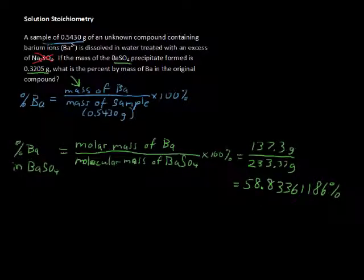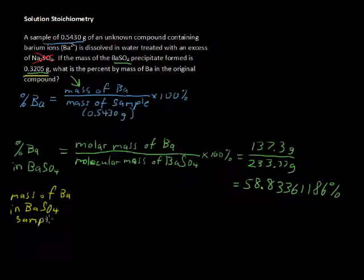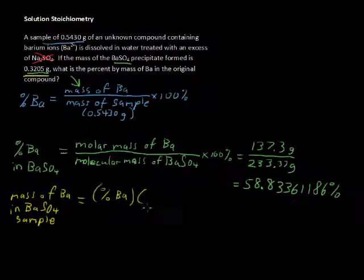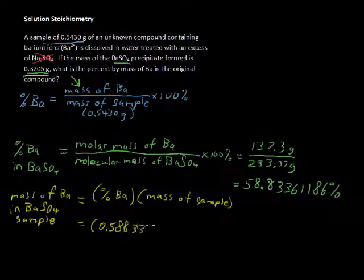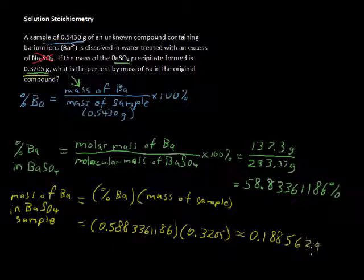Now that we have the percent of barium, now we can find the mass of the barium in this precipitate. So the mass of the barium in the BaSO4 sample, well that equals the percent of the barium multiplied by the mass of the BaSO4 sample. So that is percent as a decimal now, 0.5883361186 multiplied by the mass of the sample, which is 0.3205, and we get approximately 0.188562 grams of barium.